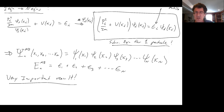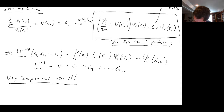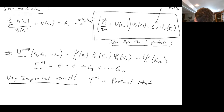This is a really important result. The many-body wave function is just the product of all the single-particle wave functions. It should make sense probabilistically: when you have multiple things and you ask for the probability of this particle being somewhere AND that particle being somewhere AND another particle being somewhere — whenever you have 'and', you multiply. So psi_many-body is a product state.